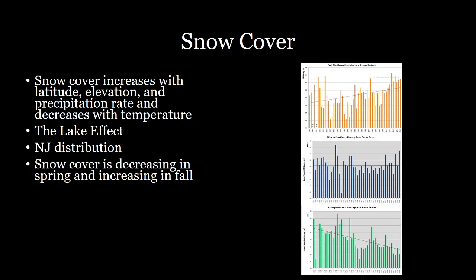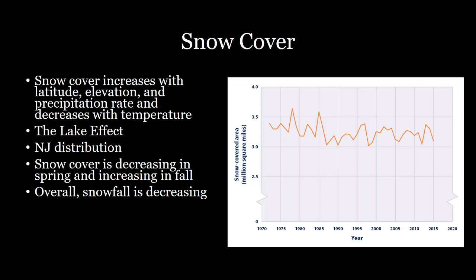We've seen these plots before — the change in snow cover for each season. Fall snow cover is increasing, winter snow cover is staying fairly stagnant, and spring snow cover is dramatically decreasing. The net effect is a slight but significant decrease in northern hemisphere snow cover — nearly 200,000 square miles of area that's no longer covered in snowfall. As we get warmer and warmer, that decrease is expected to rise.